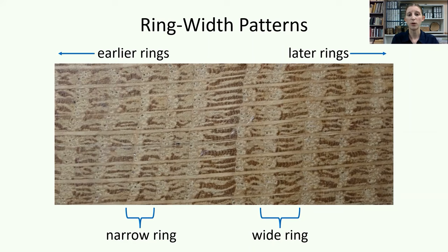This close-up of a red oak cross-section from Trempealeau County, Wisconsin provides an example of how rings vary in width from year to year, forming a distinct pattern.